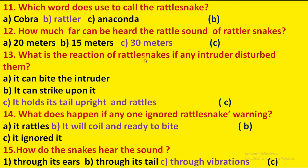What is the reaction of a rattlesnake if an intruder disturbs them? It can strike upon it; it holds its tail upright and rattles. Option C is correct. What happens if anyone ignores the rattlesnake's warning? Kya hota hai yadhi rattlesnake ki warning ko koi ignore karta hai? It rattles; it will coil and be ready to bite; it ignores it. Option B is correct: it will coil and be ready to bite.